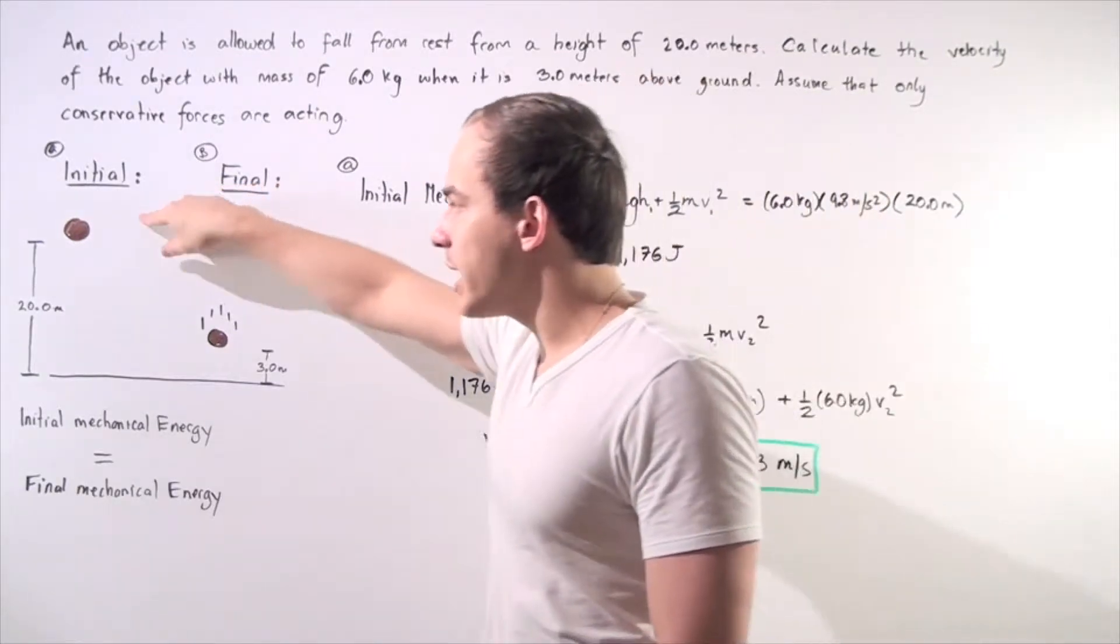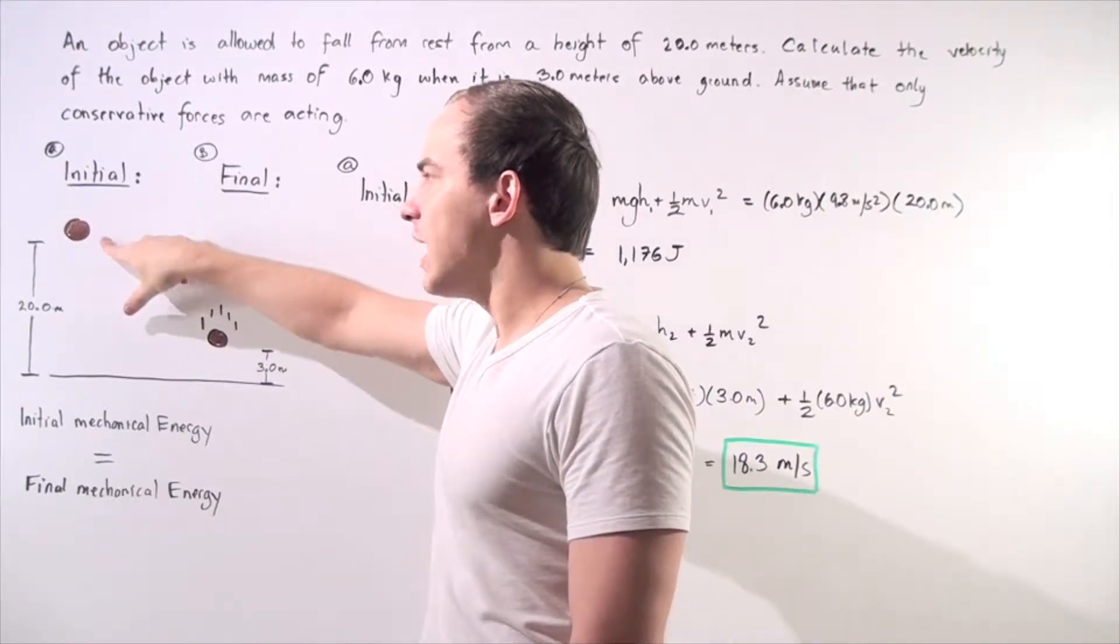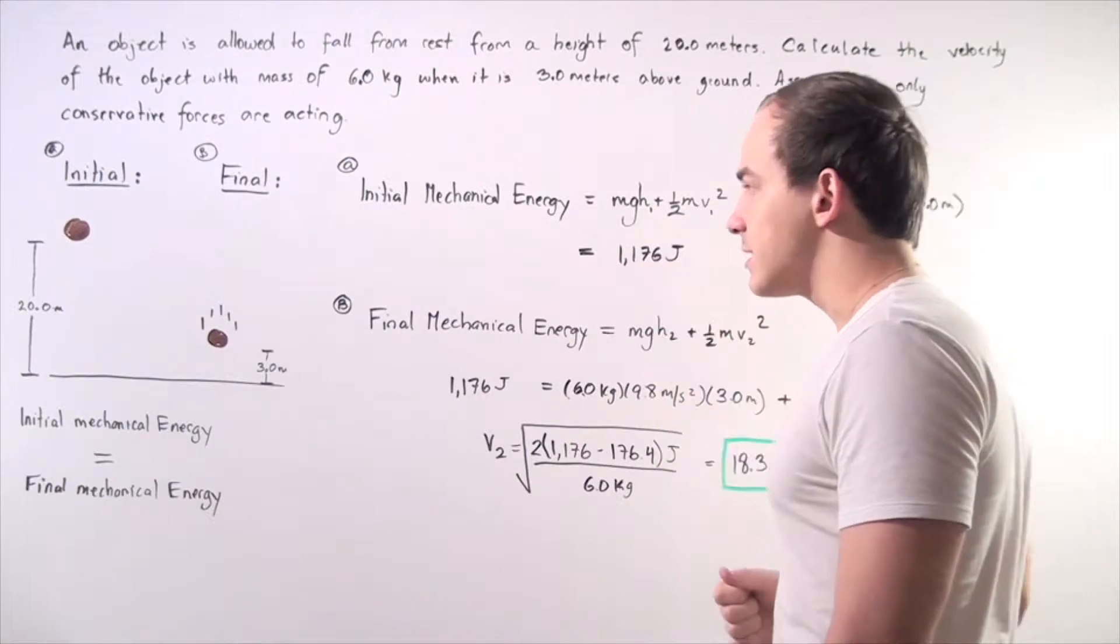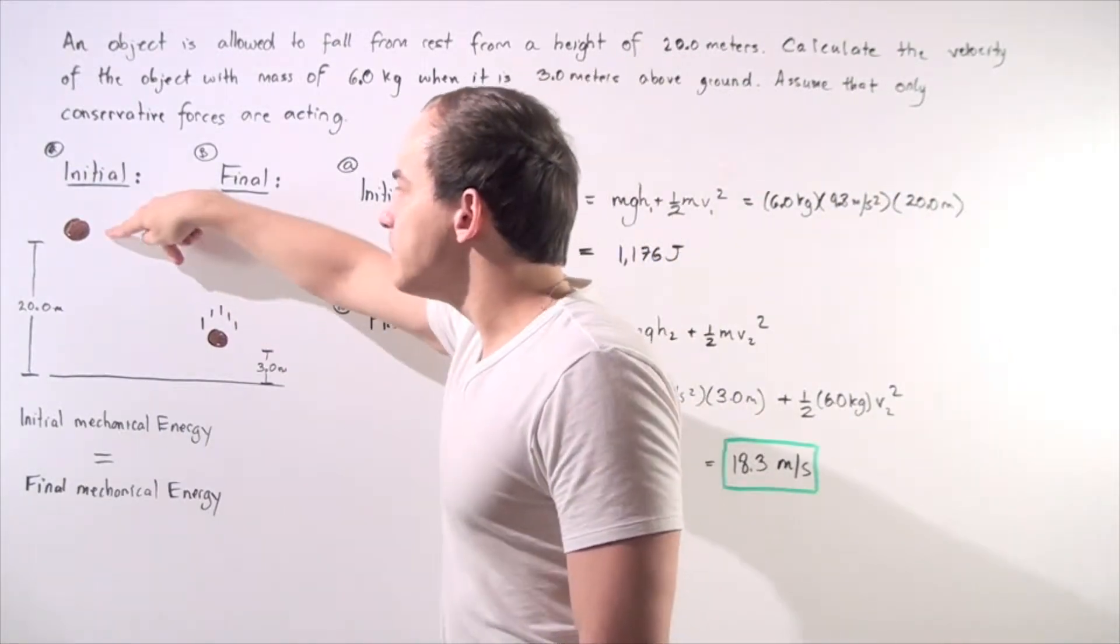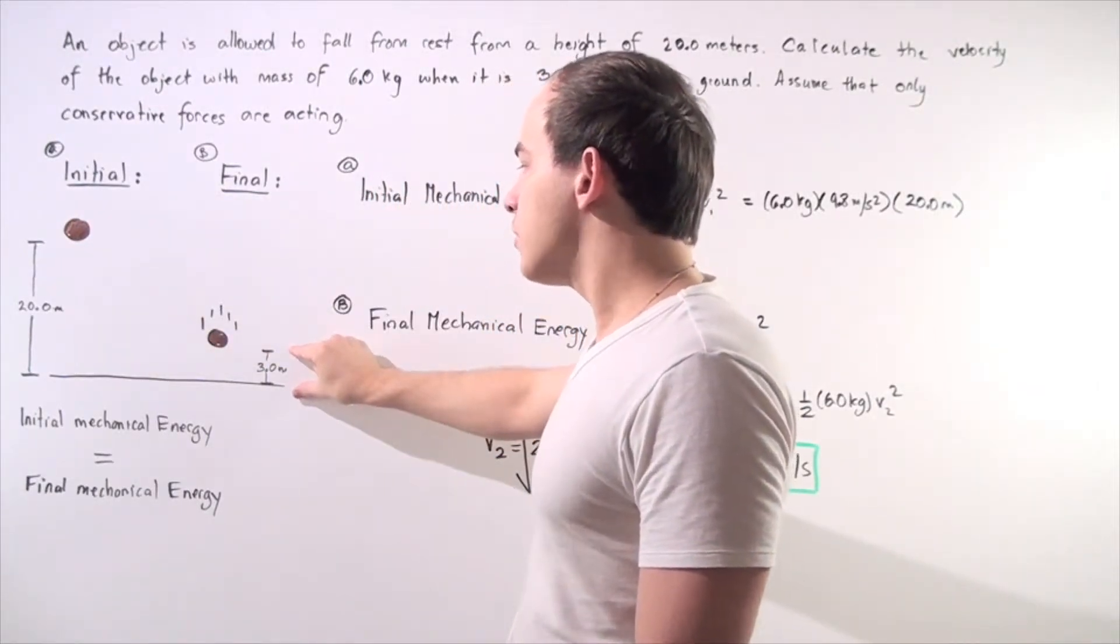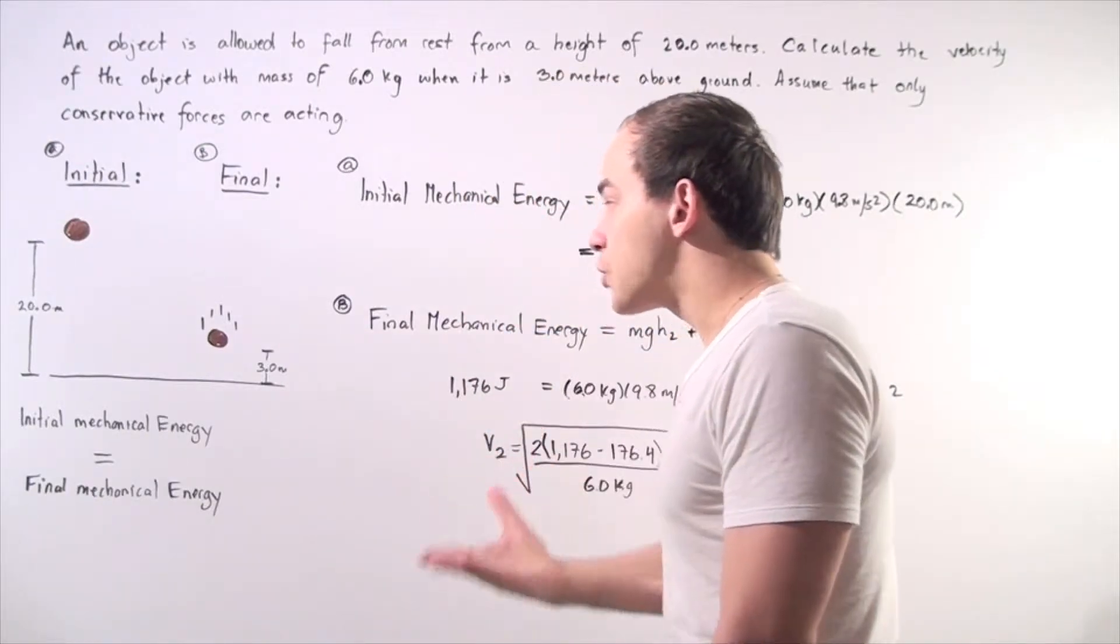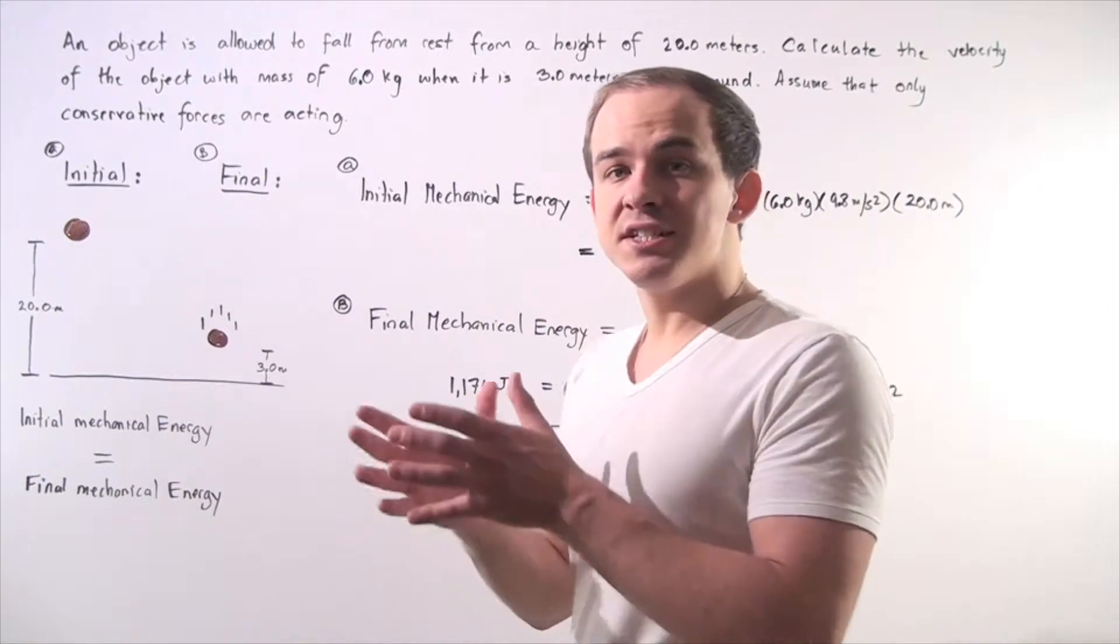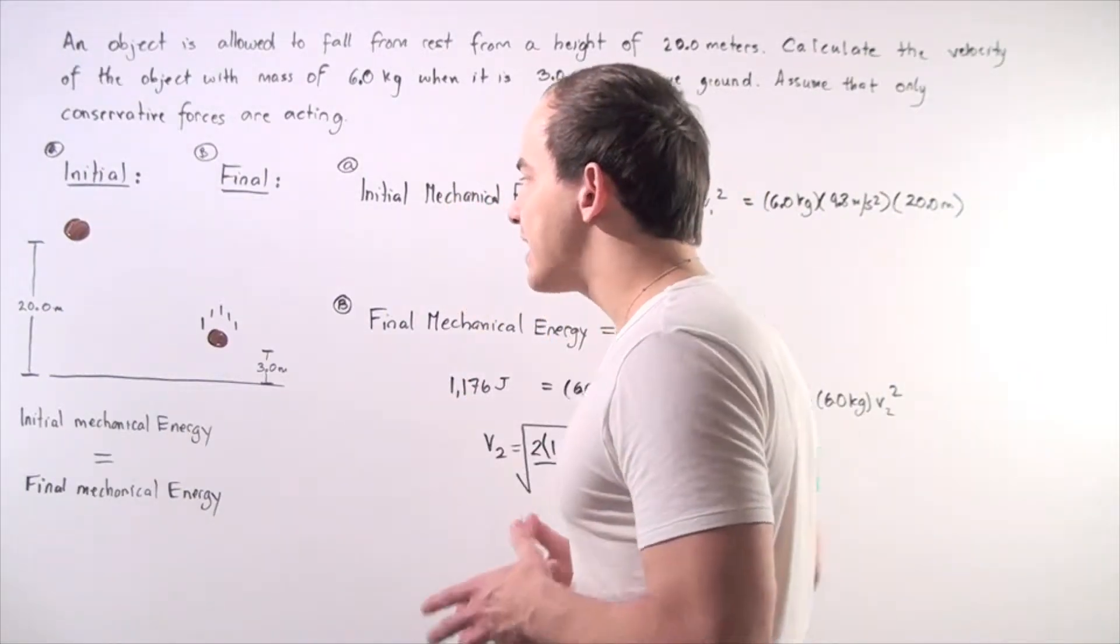Initially our object is 20 meters above the ground and it has initial velocity of 0 meters per second because our object is at rest. Now the final position of the object is 17 meters below its initial position or 3 meters above the ground. So some of that gravitational potential energy has been transformed into kinetic energy.